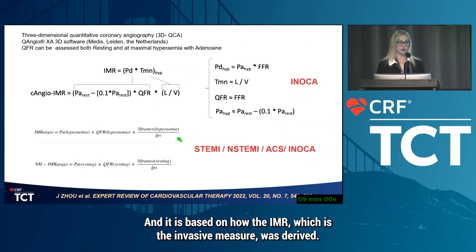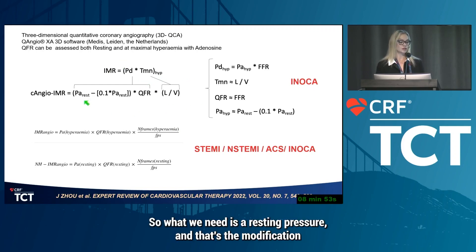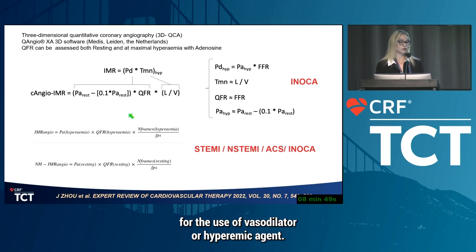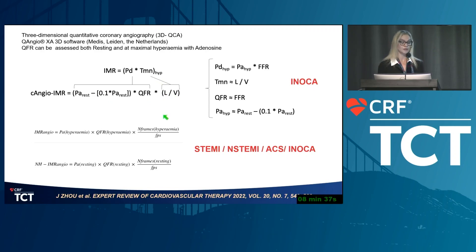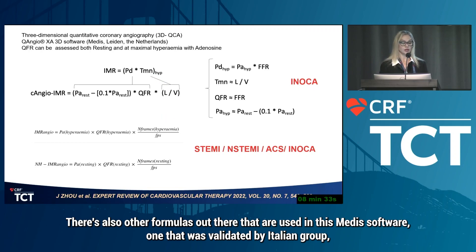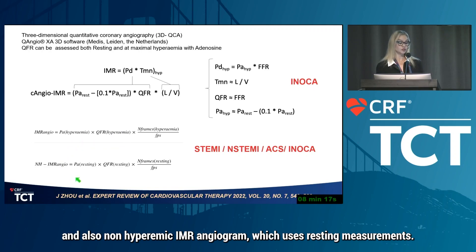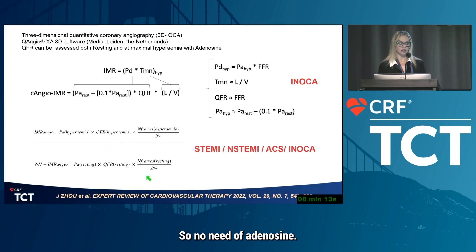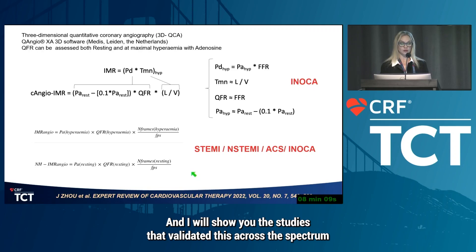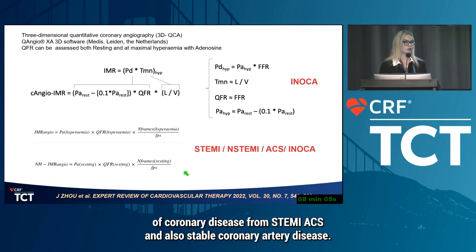This is a comparison of the formula used in that study, based on how invasive IMR was derived. What we need is a resting pressure — that's the modification for the vasodilatory or hyperemic agent — the QFR value, and an estimated time corresponding to the hyperemic transit time. There are also other formulas in the MEDIS software validated by an Italian group, based on hyperemic angiogram using frame counts, and also non-hyperemic angio IMR using resting measurements — no adenosine needed. I'll show studies validating this across the spectrum of disease: STEMI, ACS, and stable coronary artery disease.